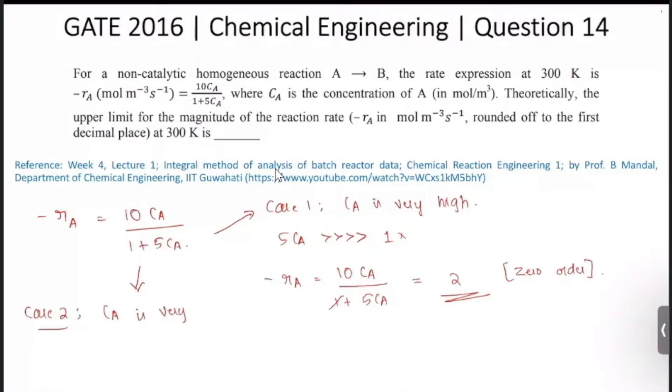And the rate equation will become minus r_A is equal to 10 C_A by 5 C_A, and this is basically 2. So this is the right answer here.